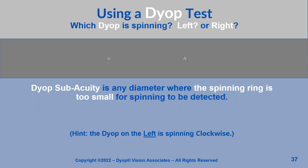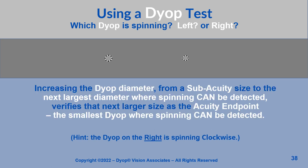Dyop subacuity is any diameter where the spinning ring is too small for spinning to be detected. Increasing the dyop diameter from a subacuity size to the next largest diameter where spinning can be detected verifies that next larger size is the acuity endpoint — the smallest diameter dyop where spinning can be detected.